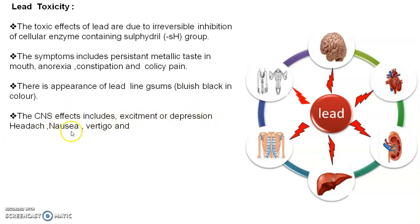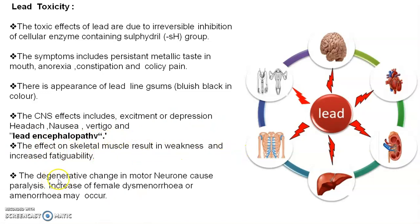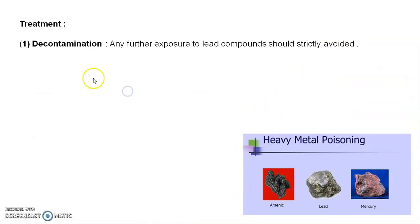Lead encephalopathy may occur. Effects on skeletal muscle result in weakness and increased fatigue. Degenerative changes in motor neurons cause paralysis. Increased female dysmenorrhea or amenorrhea may also occur due to lead toxicity. In some cases, sterility has also been noted. Lead affects the heart, brain, urinary tract, respiratory system, liver, and kidneys — all parts are affected by lead.